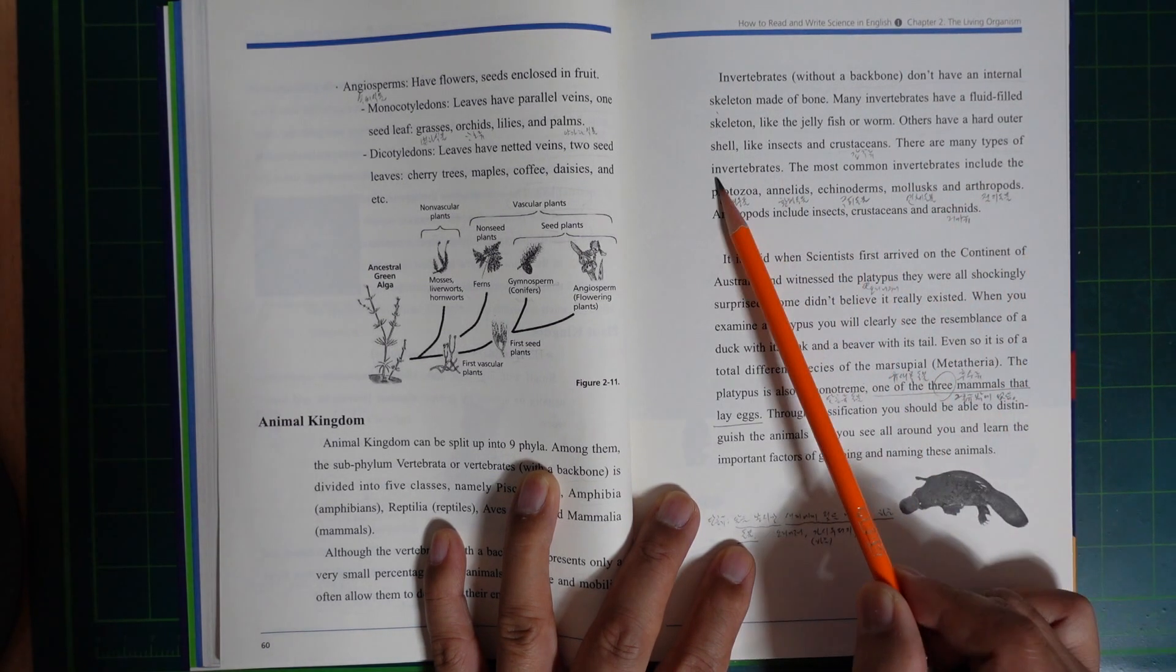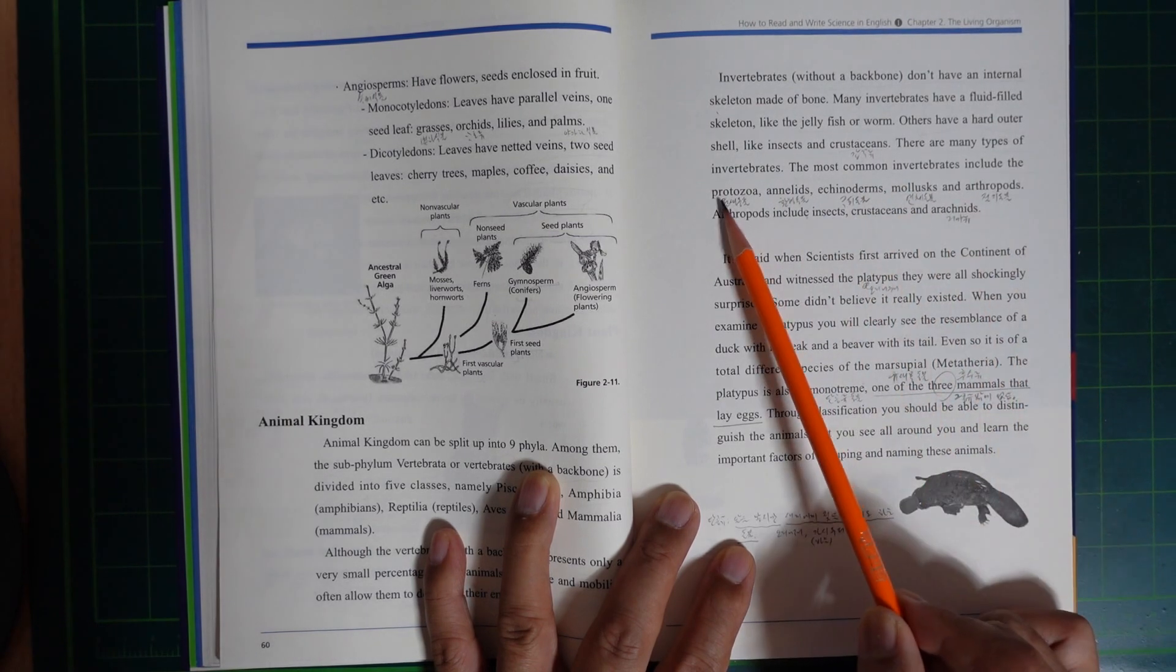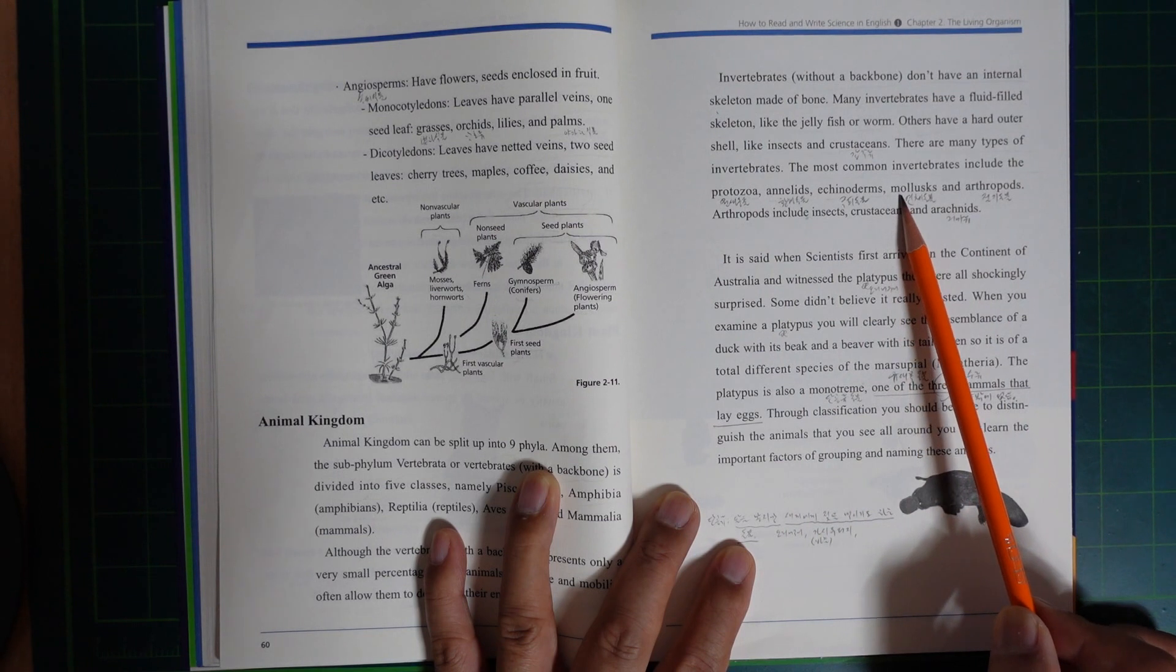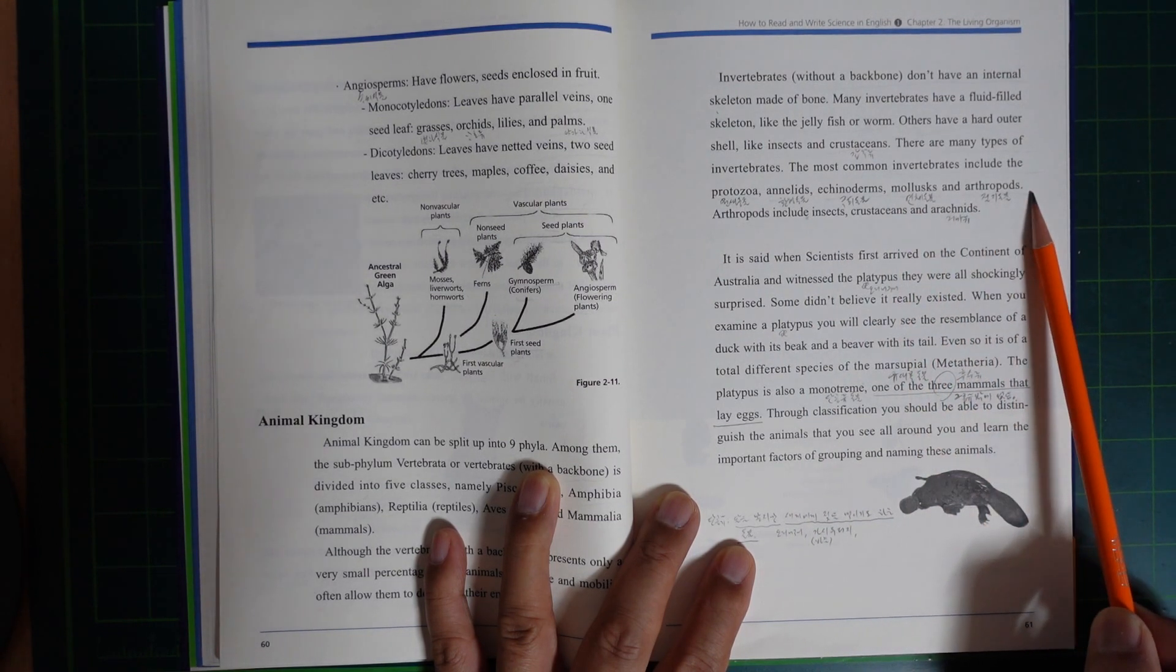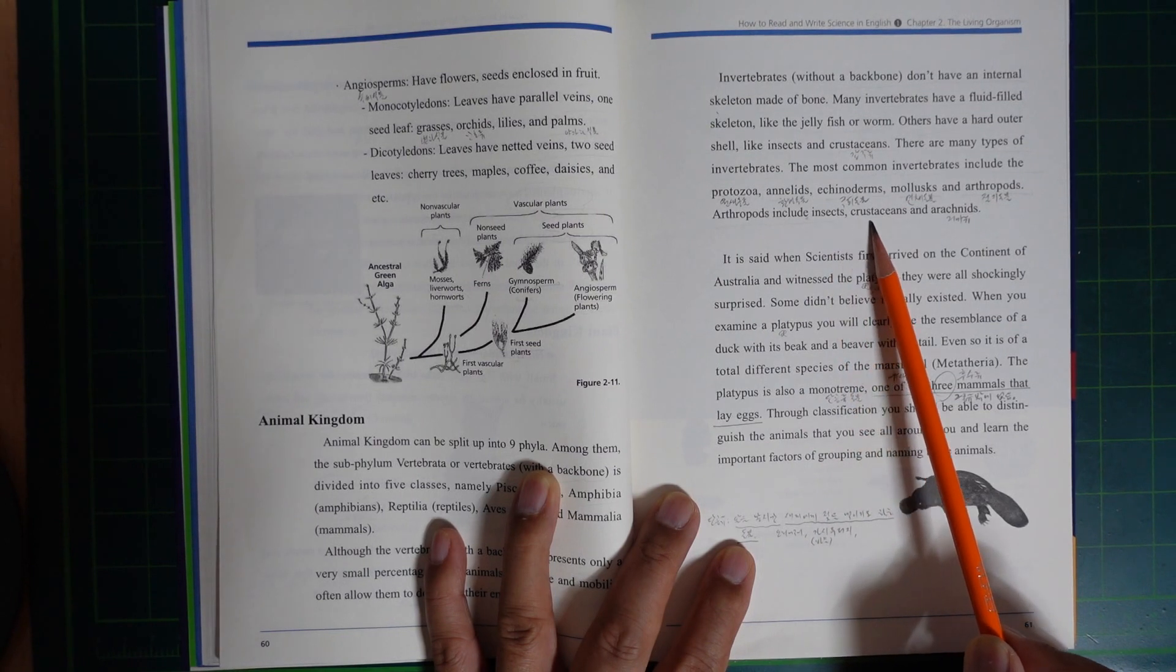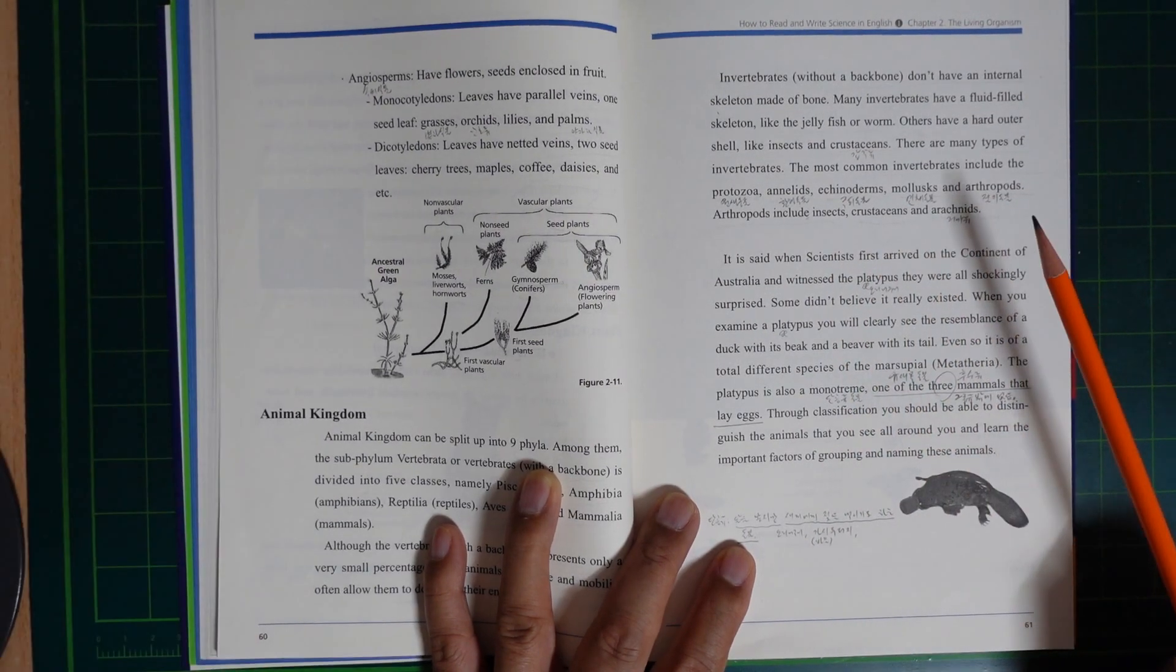Others have a hard outer shell like insects and crustaceans. There are many types of invertebrates. The most common invertebrates include the Protozoa, Annelida, Echinoderm, Mollusca, and Arthropoda. Arthropods include insects, crustaceans, and arachnids.